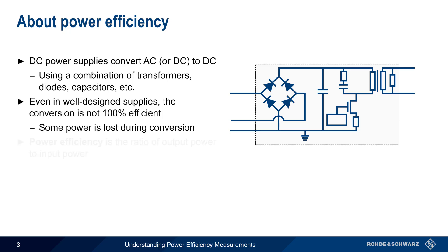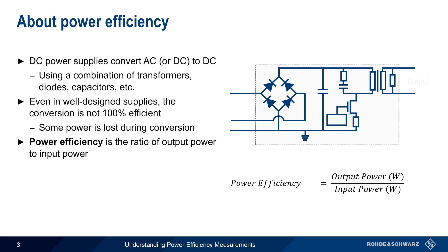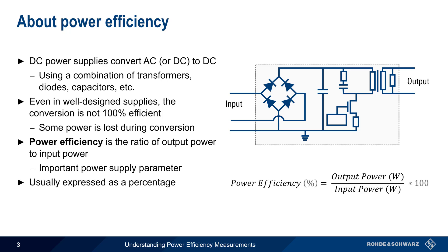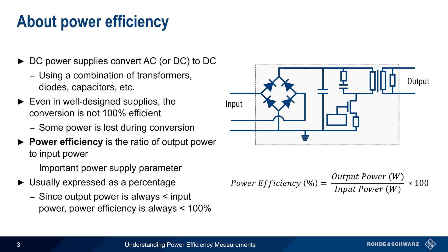Power efficiency is defined as the ratio of output power to input power, and is an important parameter for all types of power supplies. Power efficiency is usually expressed as a percentage, and since output power will always be less than input power, power efficiency will always be less than 100%.